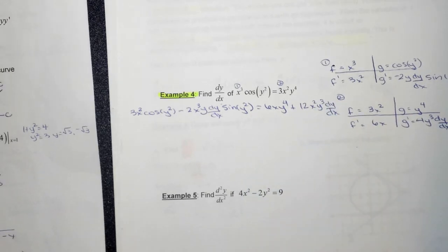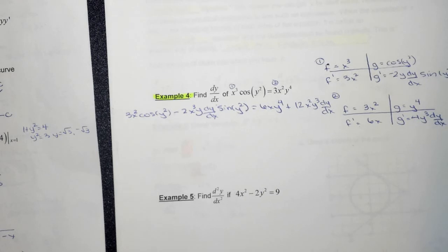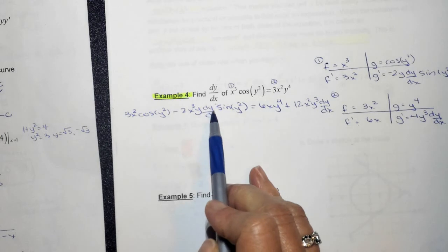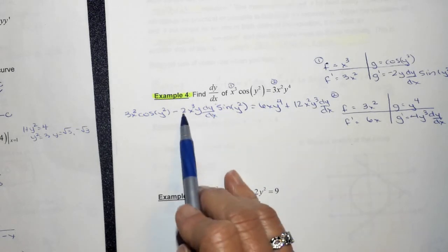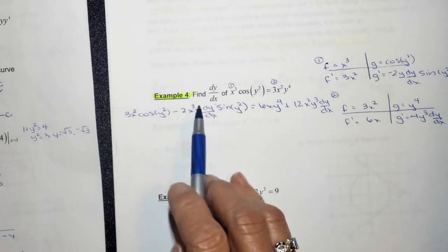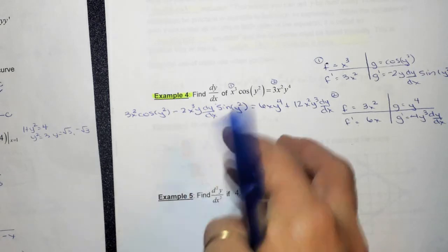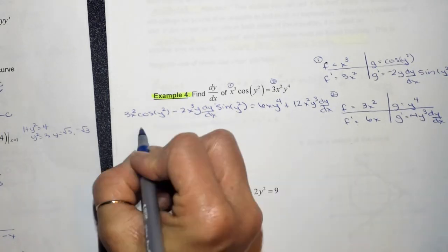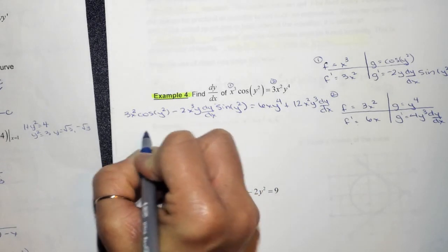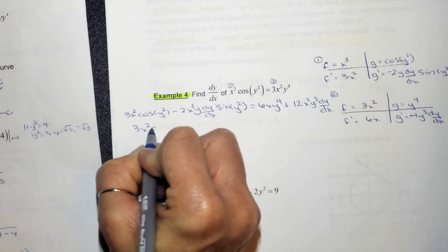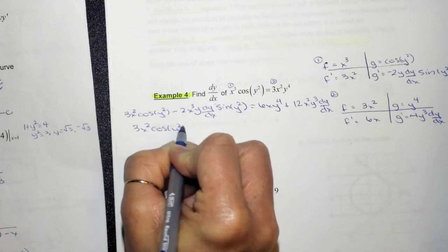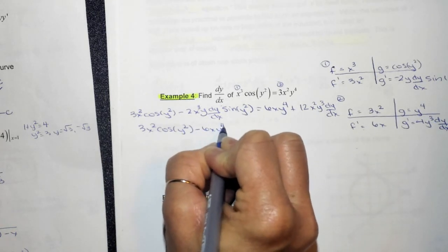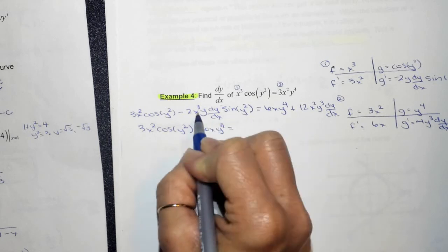So the whole idea here is that I need to get my dy dx's on one side, meaning I should probably move this whole term over here to make it positive, and then move this over here. So anything that doesn't have a dy dx, you need to get on one side, all the other terms on the other side. So on the left, I'm going to have 3x squared cosine y squared, and I'm moving this over, minus 6xy to the fourth.